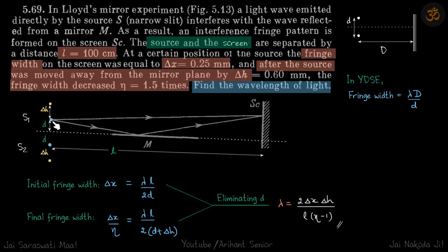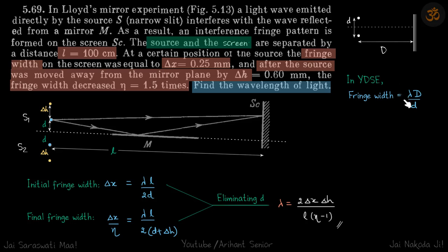After the source is moved away from the mirror by delta h, the fringe width decreased eta times. We need to find the wavelength of light. For a typical YDSC, fringe width is given by lambda D over d, where D is the distance between the slits and the screen, and d is the distance between the slits. We will use this formula directly.